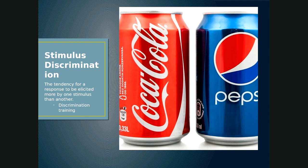The opposite of stimulus generalization is stimulus discrimination — a tendency to respond to certain stimuli more than others. For example, if you drink a Coke, get sick, and feel nauseous when you drink Coke but not Pepsi, you're exhibiting stimulus discrimination. You're able to discriminate between two similar stimuli. With dogs, if you were bitten by a Rottweiler and fear Rottweilers but not smaller dogs, you're able to discriminate between different stimuli.